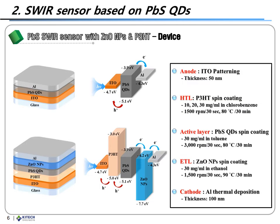The PbS SWIR photodetectors were fabricated on glass substrates coated with the ITO anode by the spin coating method. Initially, to prevent contamination of the ITO patterned glass, we cleaned the glass. To fabricate a PbS SWIR photodetector with a PCBM layer, we formed a hole extraction layer by spin casting PCBM solution and heated at 90°C on a hot plate for 13 minutes. When fabricating a photodetector without a PCBM layer, this process was omitted.